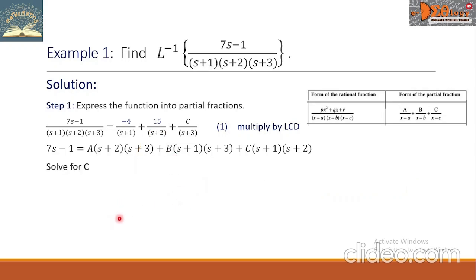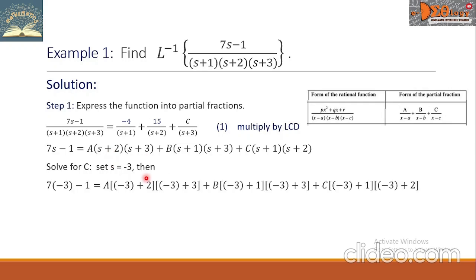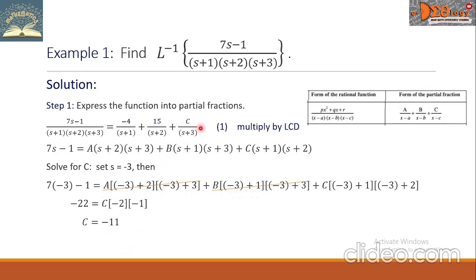Now let us solve for c. The groups for a and b have a common factor (s + 3). Therefore, let us set s equals negative 3. Changing all s by negative 3, the variables a and b will be cancelled out. Simplifying, the left side becomes negative 22 equals c multiplied by negative 2 multiplied by negative 1. Solving for c, it is equal to negative 11. Let us substitute this value of c in equation 1.